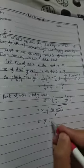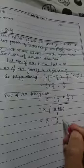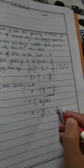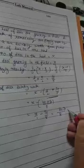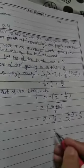x upon 1 minus 7 upon 8. Take the LCM. 8x minus 7x, that is equal to x minus 7. So that is equal to x upon 8.